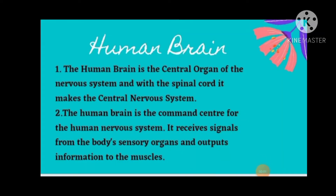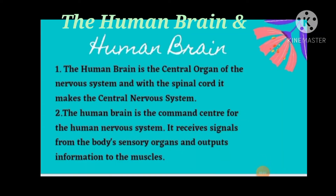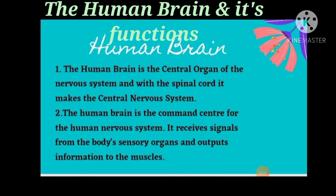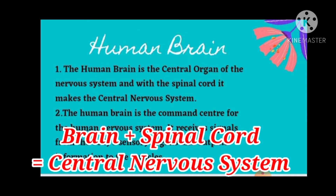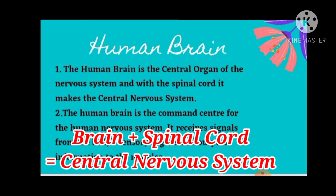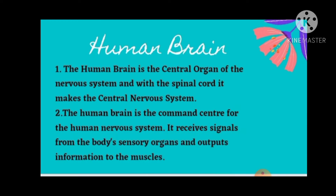In this video we will study about the human brain and its functions. The human brain is the central organ of the nervous system, and with the spinal cord it makes the central nervous system, or CNS. The human brain is the command center for the human nervous system. It receives signals from the body's sensory organs and outputs information to the muscles.